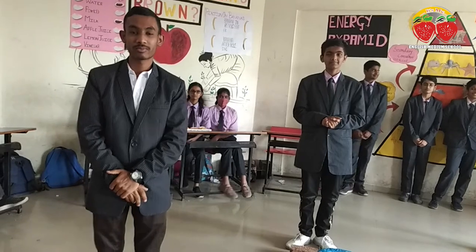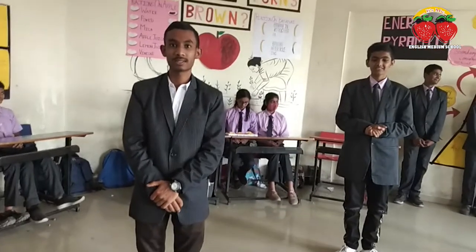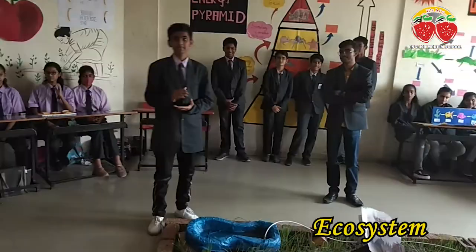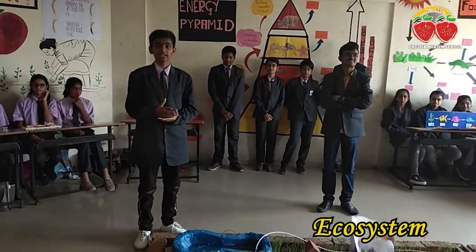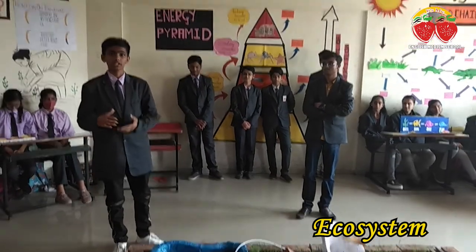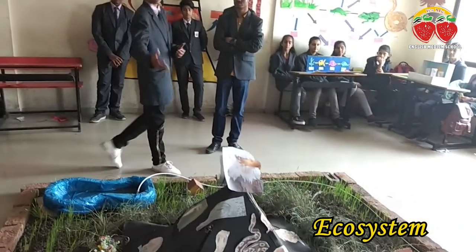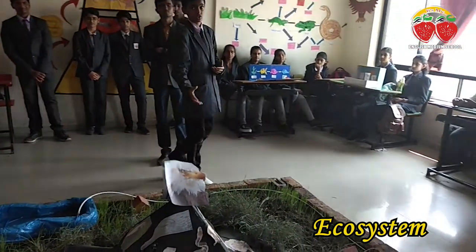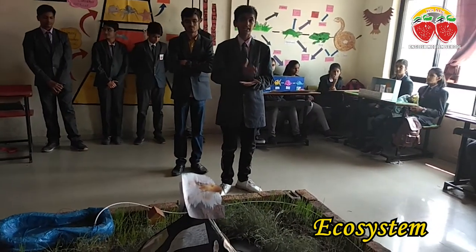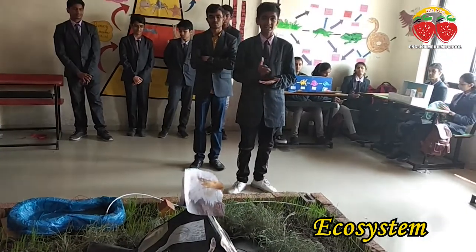My name is Sai Bada. Today me and my friends are going to represent the ecosystem. An ecosystem is the interaction between different organisms which controls the species and environment of the world. A geographical area where plants, animals, and human beings grow is called an ecosystem. This chain helps to control the species of the world, the environment of the world, and the production of plants and other animals.